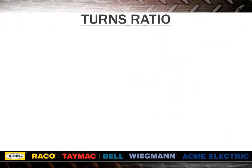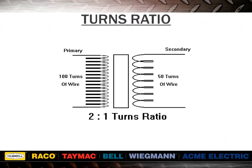Next, we will discuss turn ratios. Essentially, all transformers are nothing more than a ratio device. The turns ratio of the primary and secondary windings determines the amount of voltage transformation. In the example shown here, 100 turns on the primary and only 50 turns on the secondary means a turn ratio of 2 to 1.